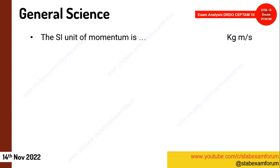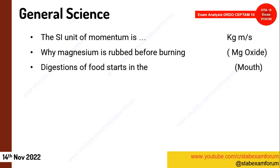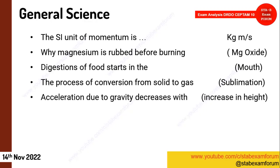The SI unit of momentum — quite easy: p = mv, where m is kg and v is meters per second. One chemistry question: why is magnesium rubbed before burning? The reason is the presence of magnesium oxide. One question: digestion of food starts where? Answer: mouth. Another simple question: what is the process of conversion from solid to gaseous state? Answer: sublimation — this has come in previous years also.